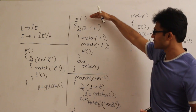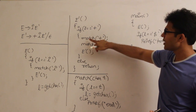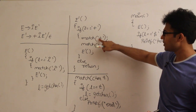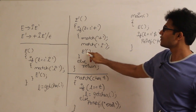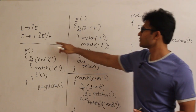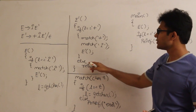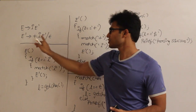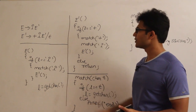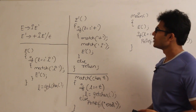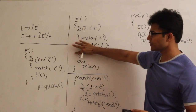For E dash, the second production E dash derives plus IE dash, the function is like this: first check if the lookahead is plus, match plus, then match I, and then again call E dash. Else return, which handles the third production — epsilon. So for these three productions I have written three functions.